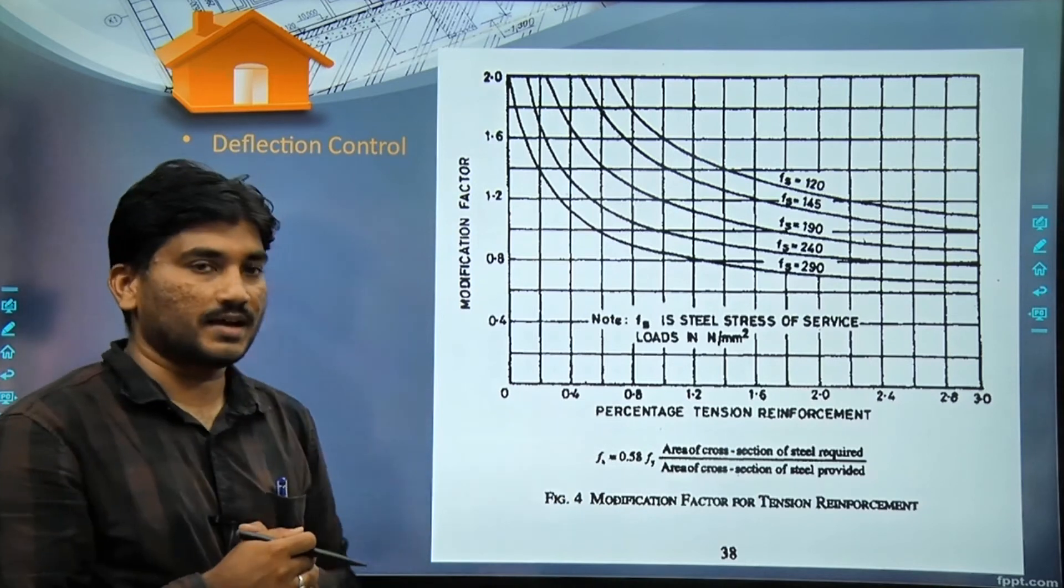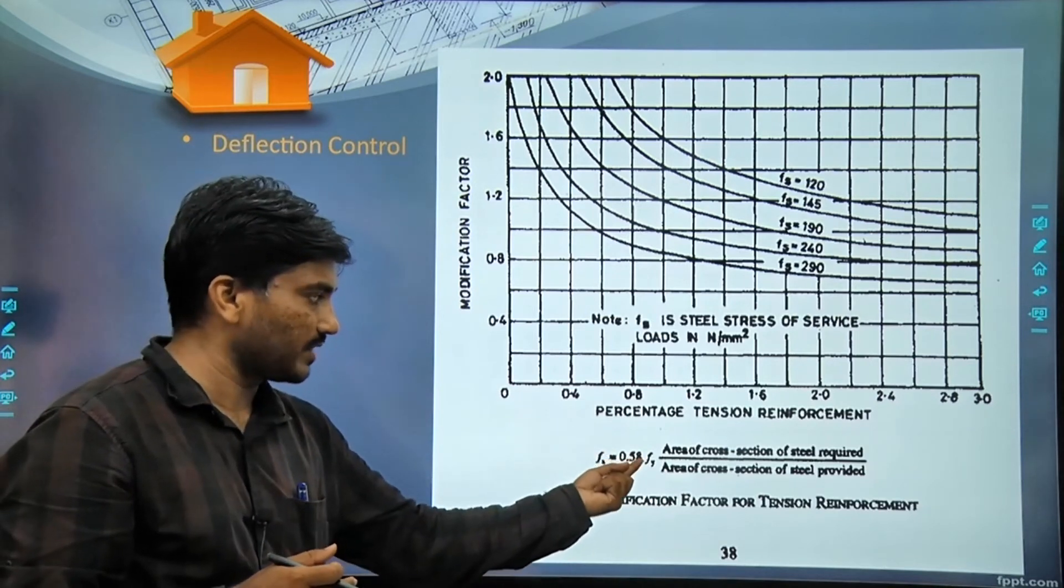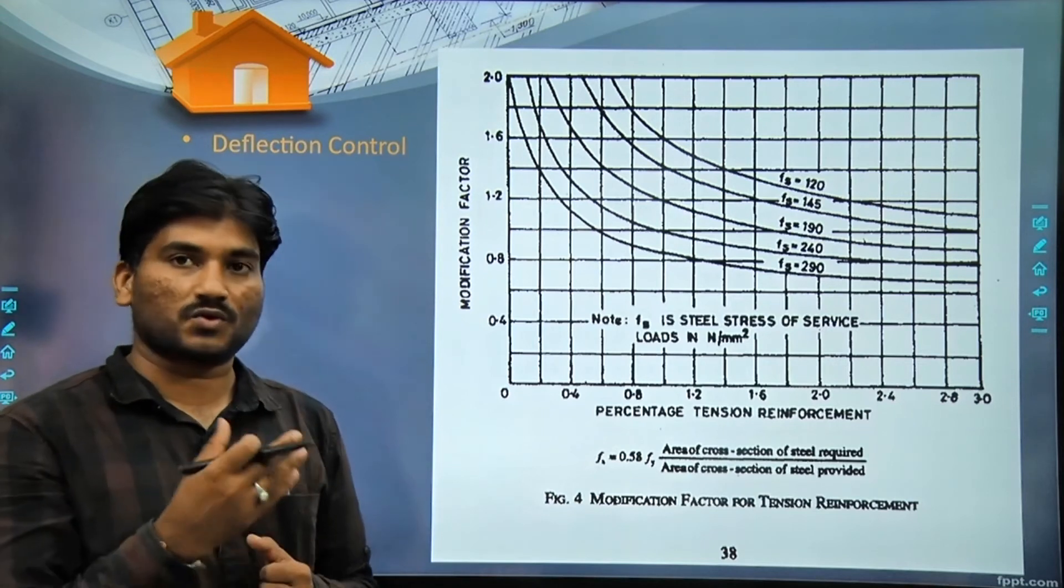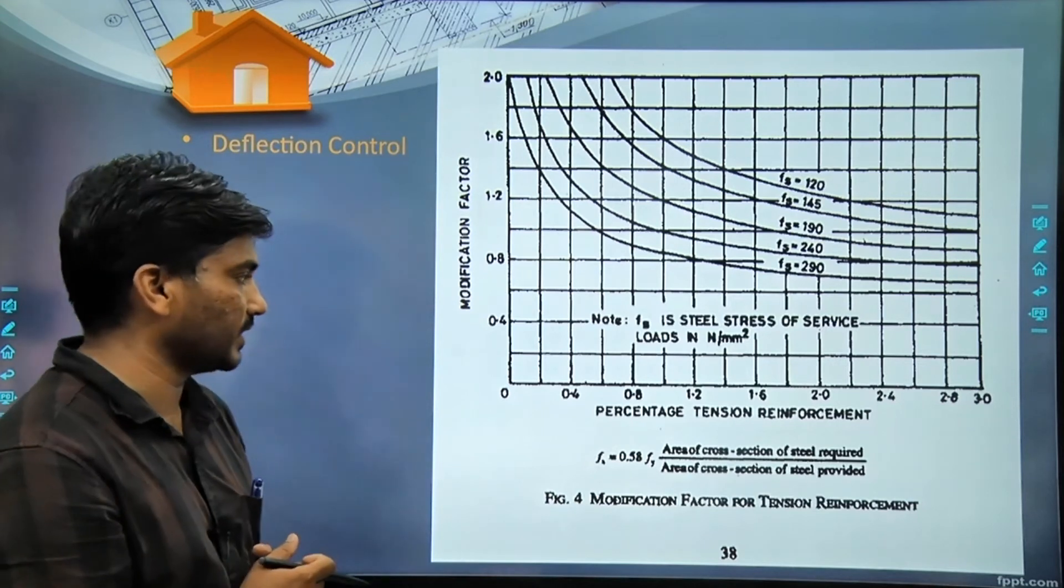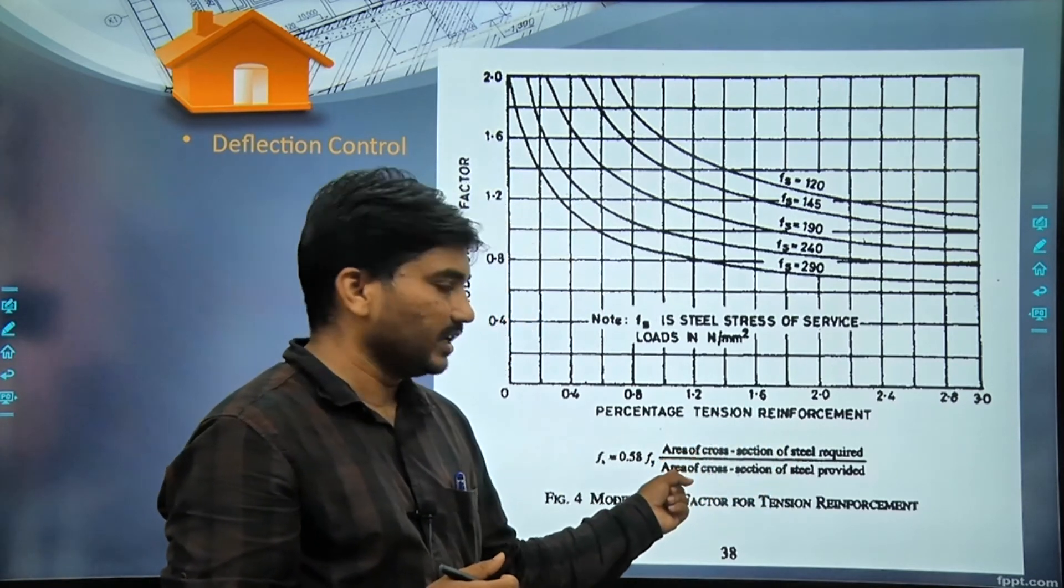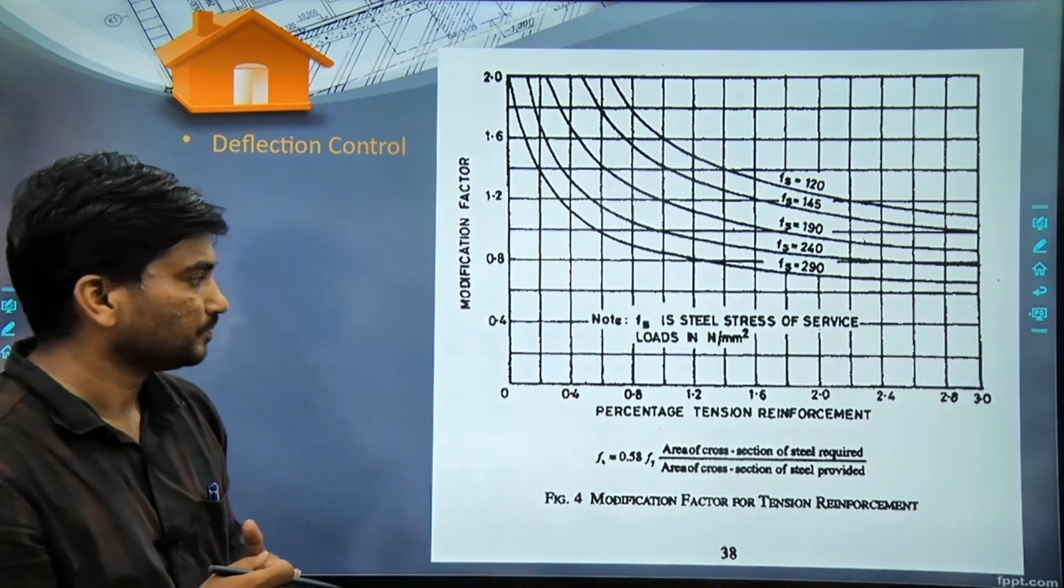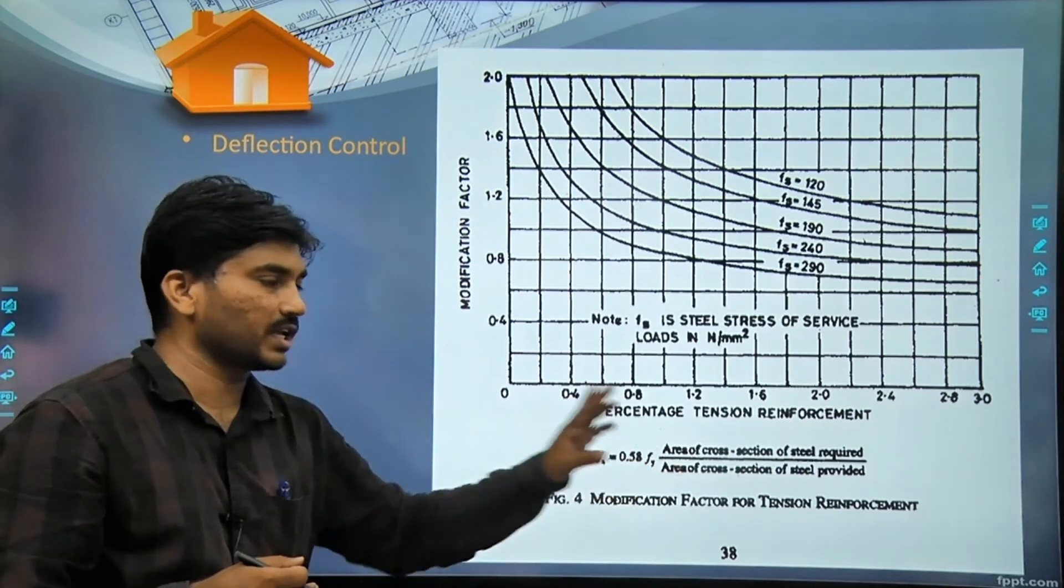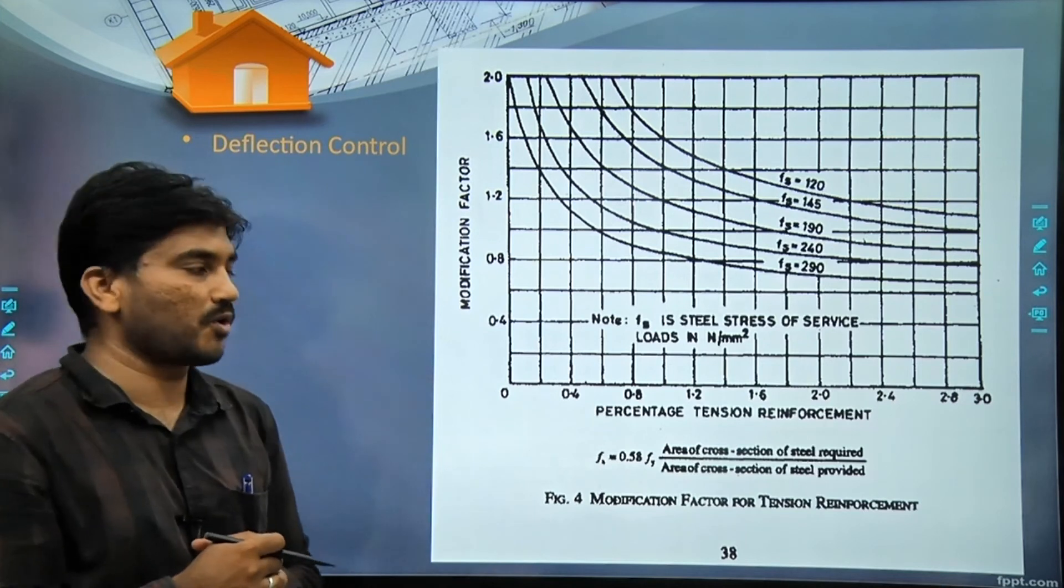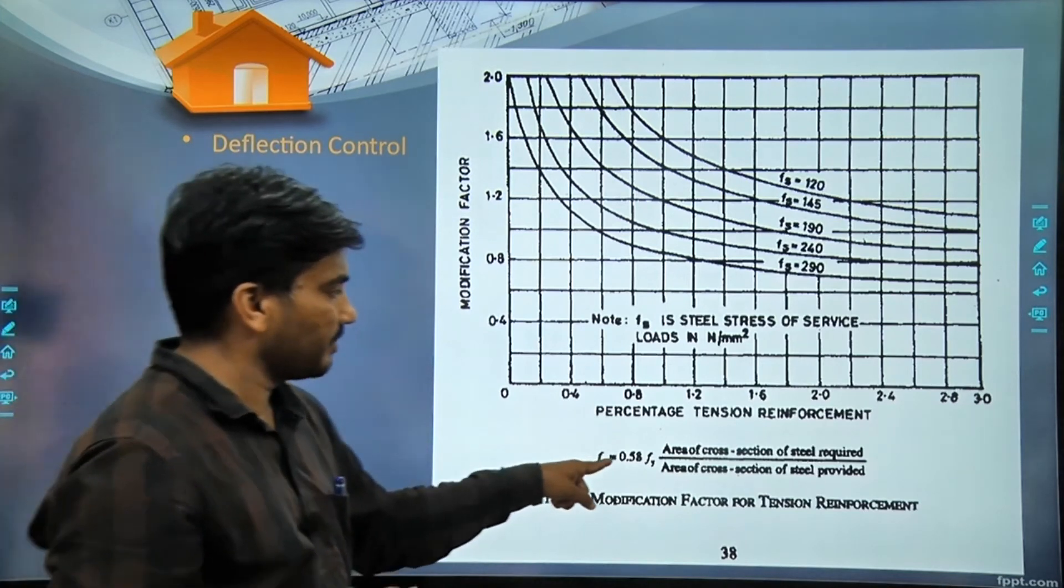From this we have to calculate fs. How to calculate fs? 0.58 into fy. fy means yield strength of steel - 415, 250, 500. Then area of cross section of steel required divided by area of cross section of steel provided. Initially we can consider both same and just use the formula 0.58 fy.